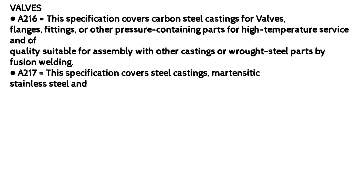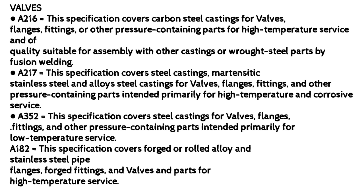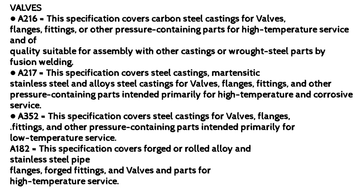ASTM materials — Valves: A216 covers carbon steel castings for valves, flanges, fittings, or other pressure-containing parts for high temperature service, suitable for assembly with other castings or wrought steel parts by fusion welding. A217 covers steel castings — martensitic stainless steel and alloy steel castings — for valves, flanges, fittings, and other pressure-containing parts intended primarily for high temperature and corrosive service. A352 covers steel castings for valves, flanges, fittings, and other pressure-containing parts intended primarily for low temperature service. A182 covers forged and rolled alloy and stainless steel pipe flanges, forged fittings, and valves and parts for high temperature service.